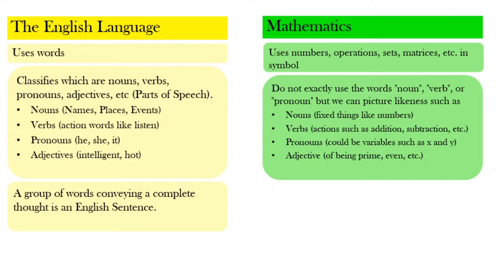As I mentioned, a group of words conveying a complete thought is an English sentence. But in mathematics, if we group expressions and that group of expressions conveys a complete thought, then it is called a mathematical sentence. Equations are examples of a mathematical sentence. Inequalities are other examples of a mathematical sentence.